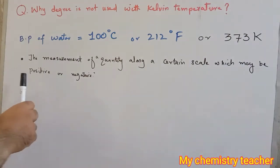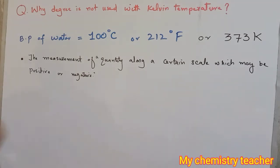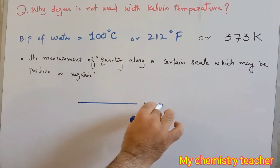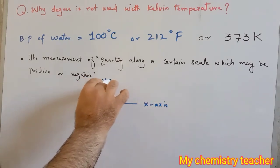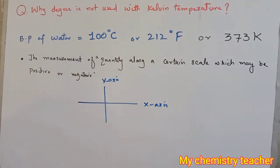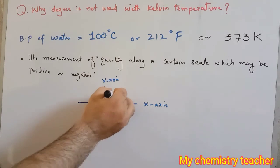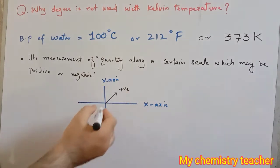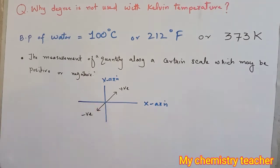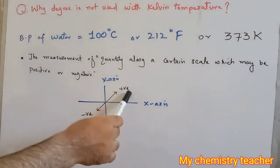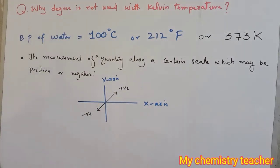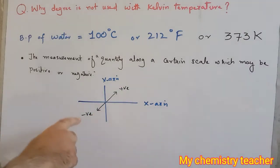For example, when we draw quantities on axes — like angles — this is the x-axis and this is the y-axis. An angle can have a positive value in one direction and a negative value in the other direction. You know that angles may be positive or negative, and that is why we represent angles in degree.